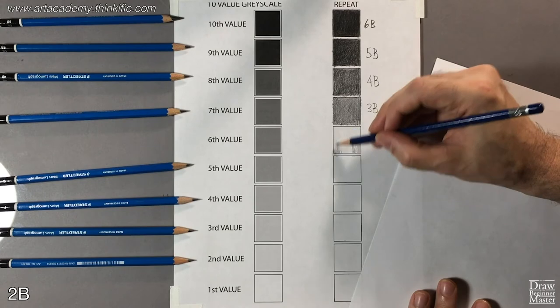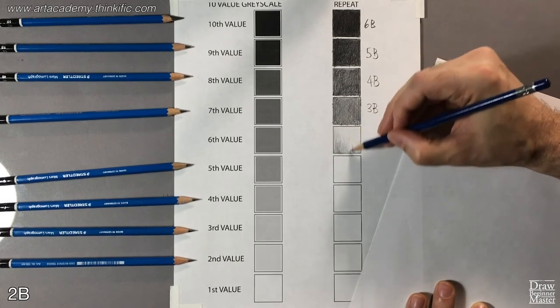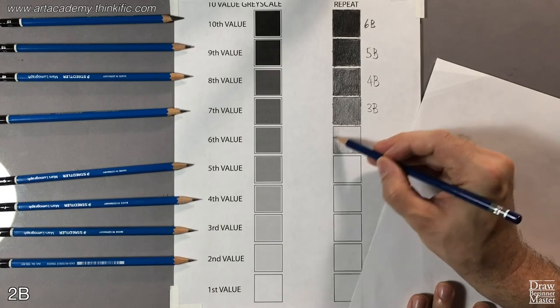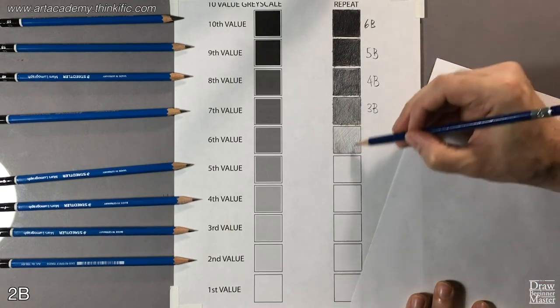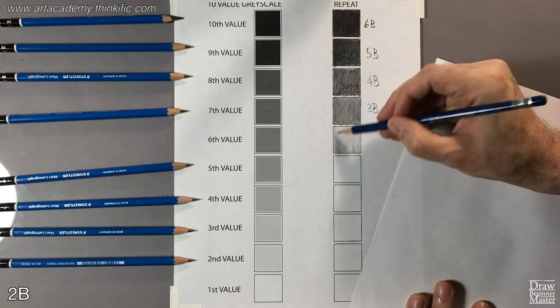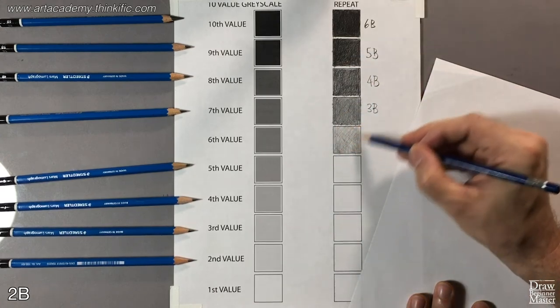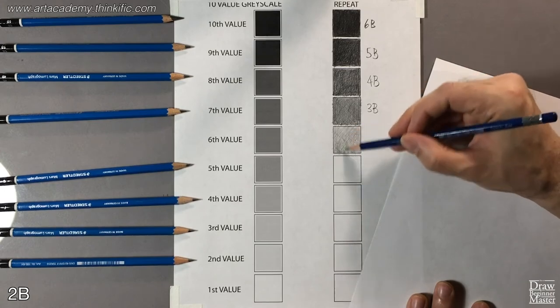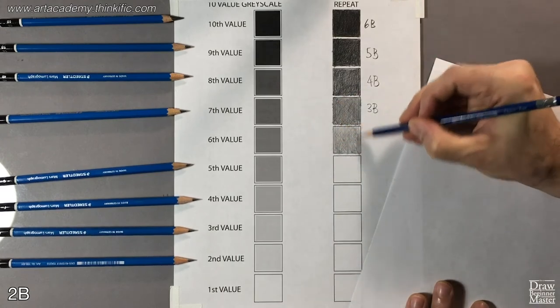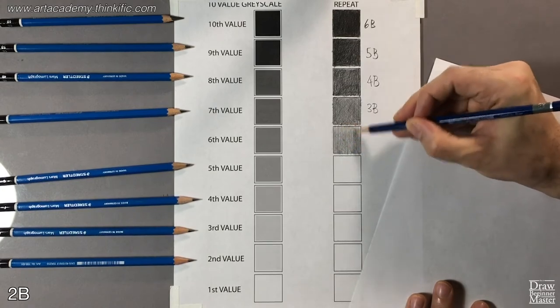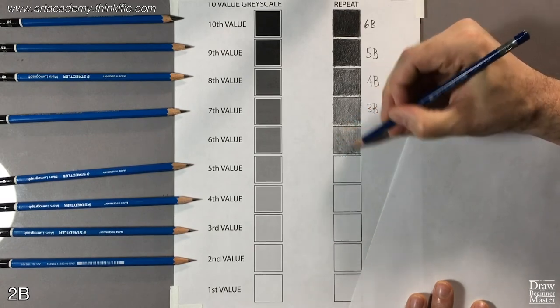For sixth value, I'll use a 2B lead. The 2B pencil is right in the middle of the spectrum, and in my opinion, the most versatile lead. You'll see me use it, or a 3B lead to do most of my preliminary drawing and sketching in this course. That's why I suggested you buy a mechanical 2B pencil on the supply list. I'm still gradually building up to the darkness of the value, but my shading is going to become much more linear as the leads get harder, so more of a cross-hatching technique, which for beginners is just short straight lines. Just keep building, and when it matches the value of the square on the left, move on to fifth value.